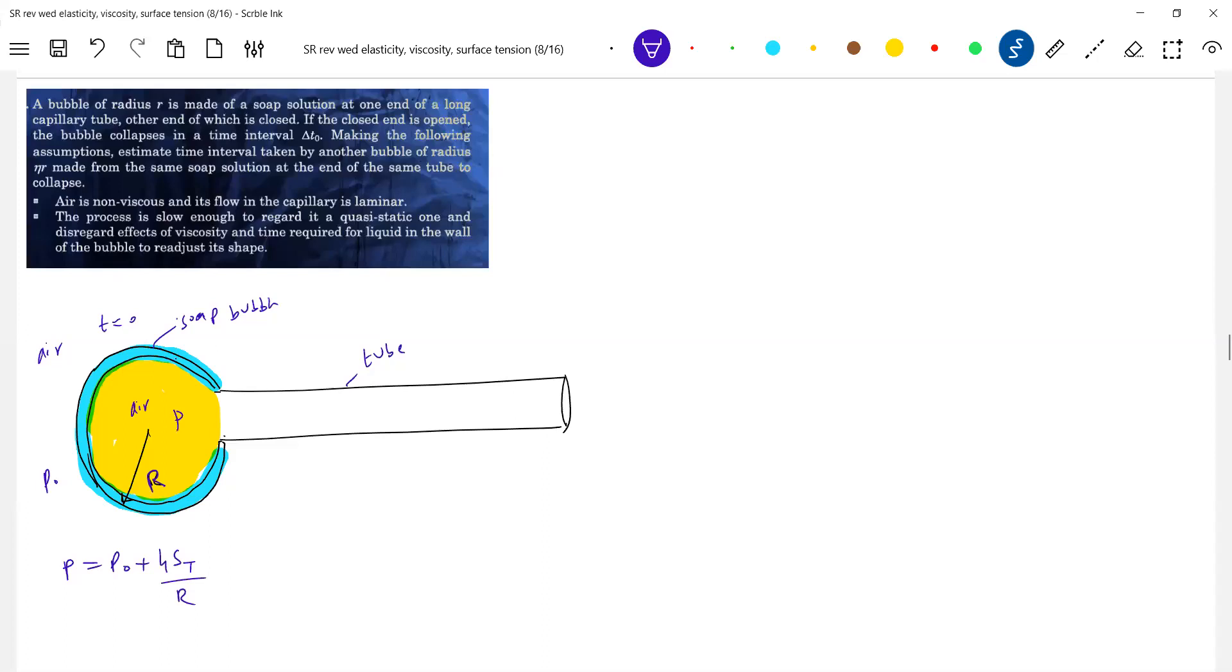Now with the time, what will happen is the pressure is more inside the bubble than outside. So therefore, the air starts rushing here. Your air will be present P0, here P. So the air starts flowing from higher pressure to lower pressure. As the air starts flowing, the bubble starts collapsing. So that's what he's asking.